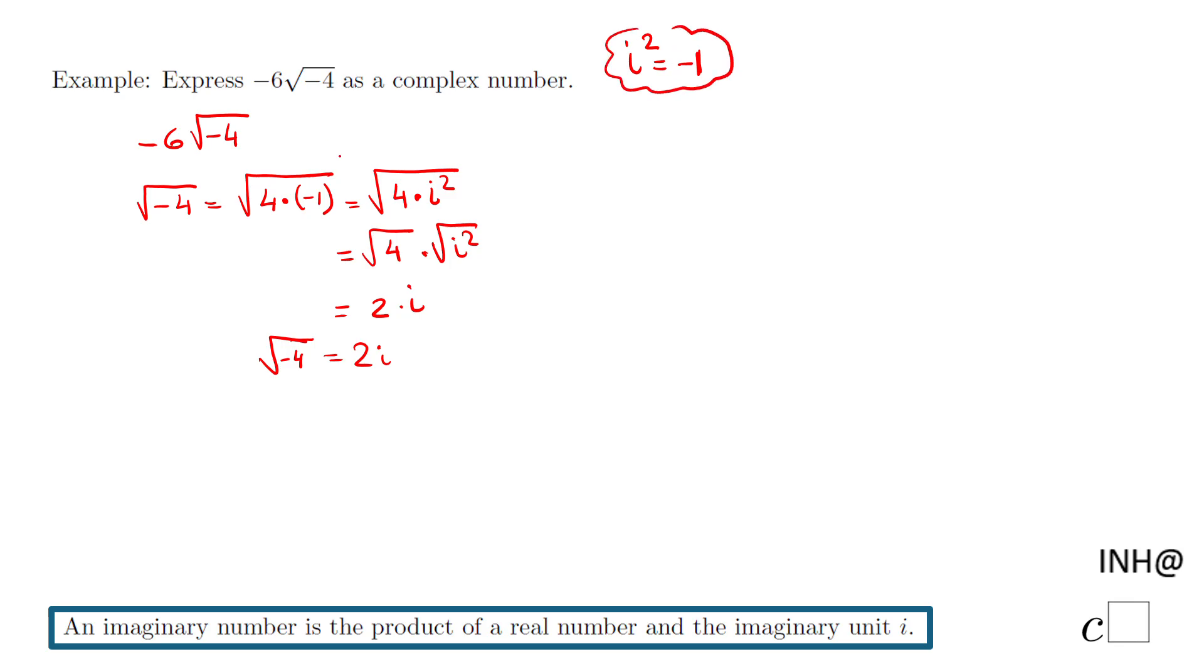So now we can go back here and we have negative 6 times 2i. So we have a product between a real number, negative 6, and an imaginary number. This is an imaginary number and we have what is called negative 12i.